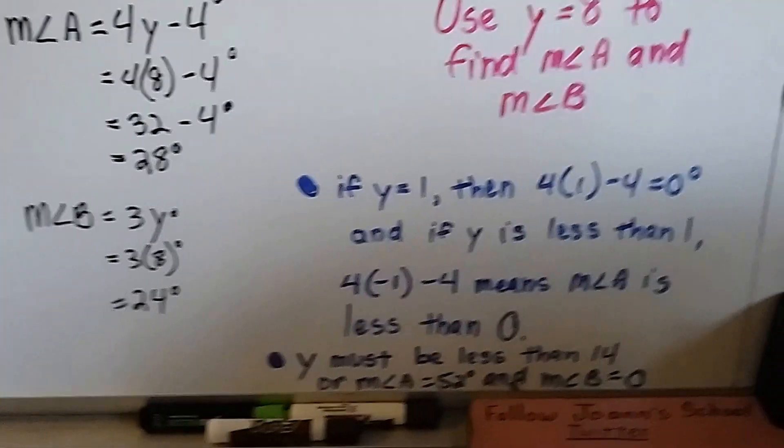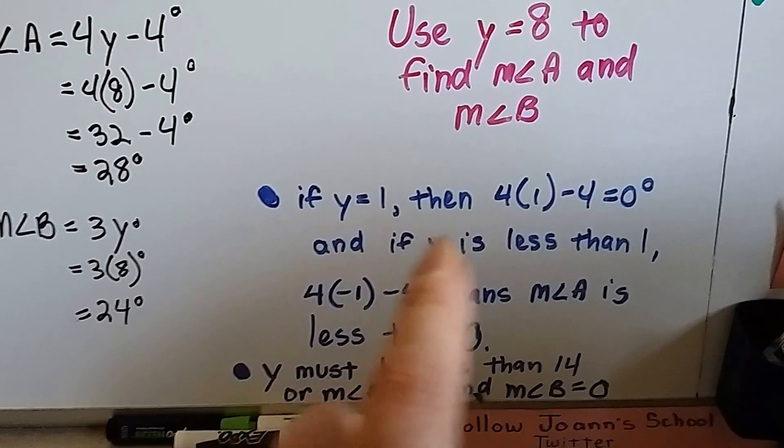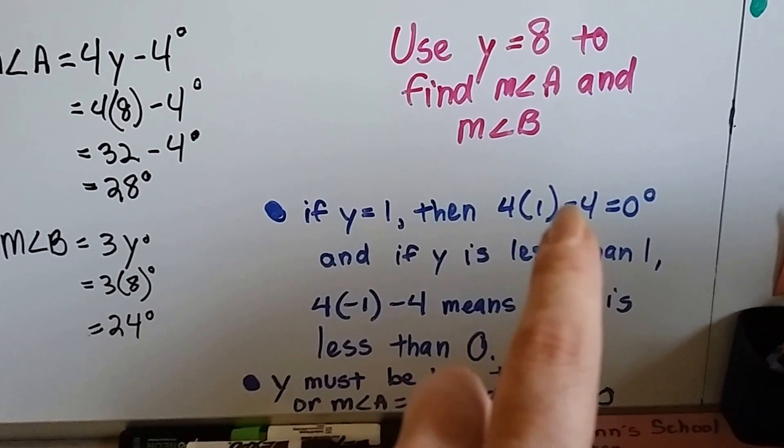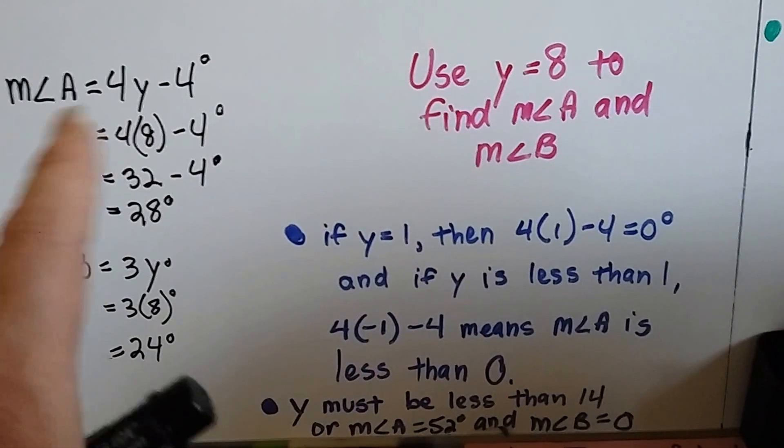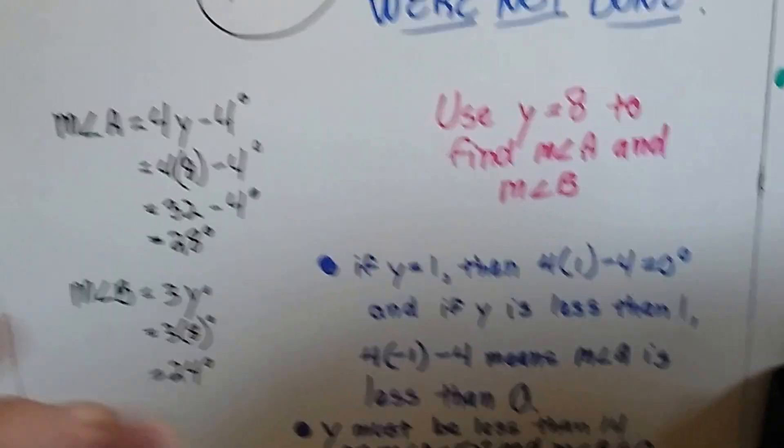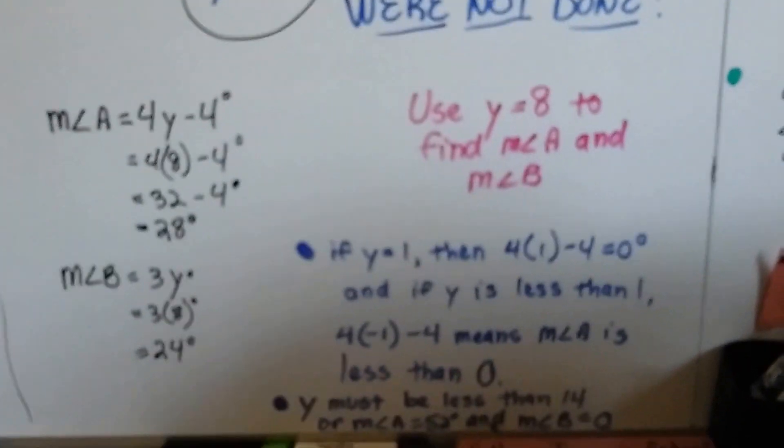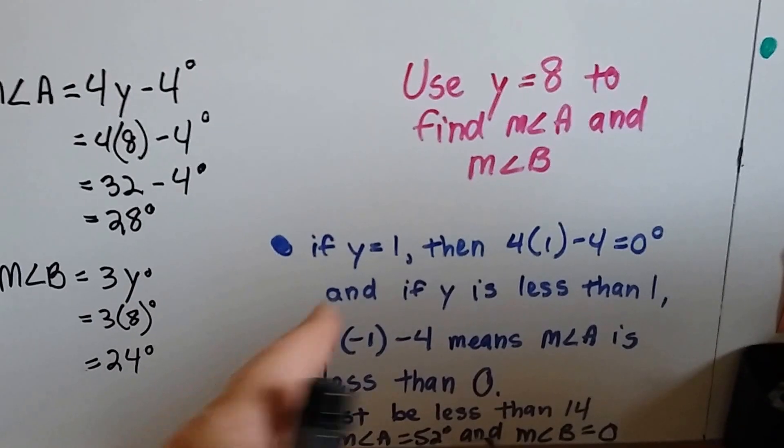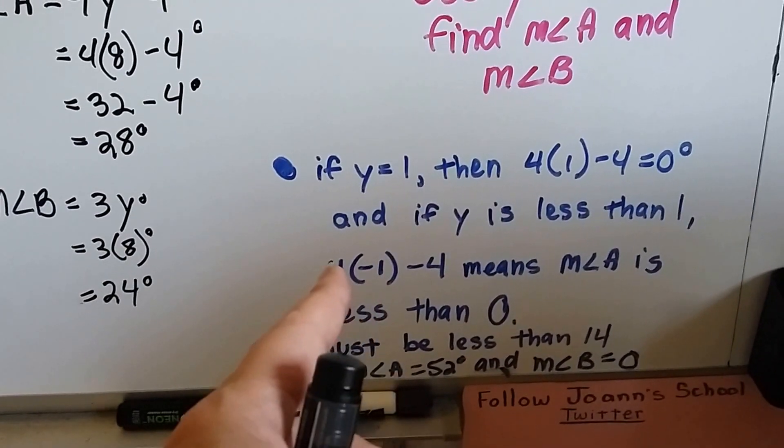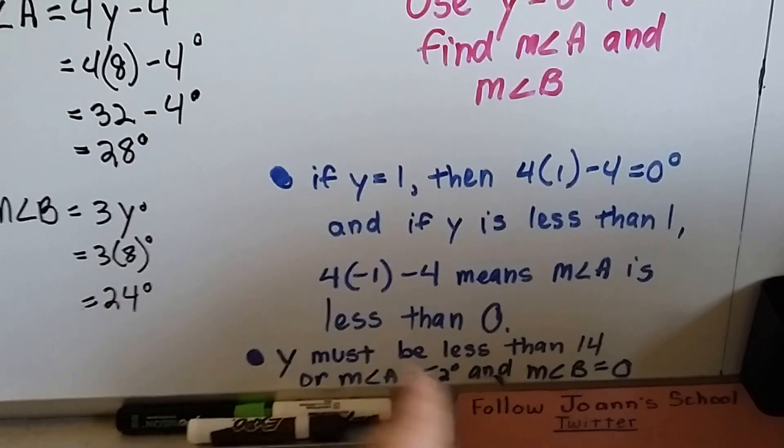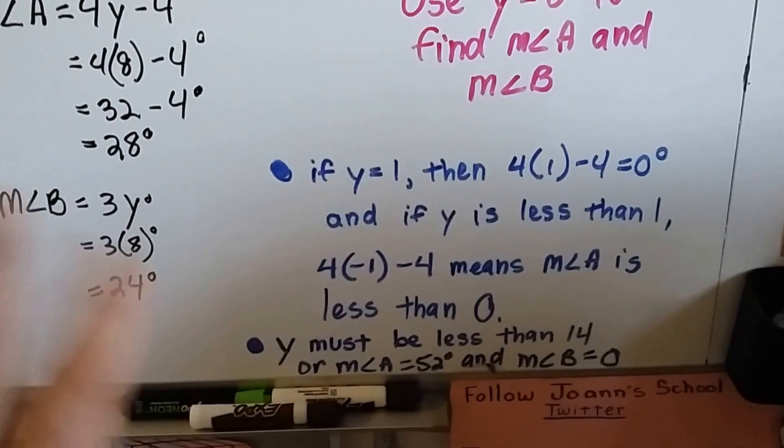Now there's one thing I wanted to point out to you. We have to know that y, if it was equal to 1, that would give us 4 times 1 is 4 minus 4, and that would be 0 degrees. So we know the answer cannot be 1, because the measure of angle A is not 0 degrees. We can look at it and tell it's not 0 degrees. It's got some oomph to it. Now, could it be less than 1? Well, if it was less than 1, like a negative 1, 4 times a negative 1 would be negative 4, negative 4 minus 4. Now we're saying that the measure of angle A is less than 0. It's down in the negatives. No, it's not that either.